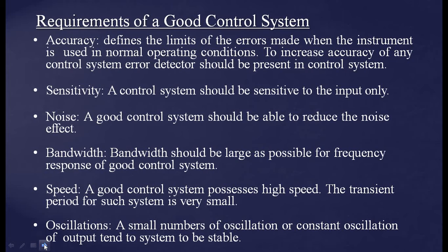Then bandwidth — bandwidth should be as large as possible for frequency response in a good control system. Then speed — a good control system possesses high speed; the response time must be very short and the transient period for such a system is very small. Then oscillations — a small number of oscillations or constant oscillation of output tends to make the system stable. We need a stable system; that is the requirement.